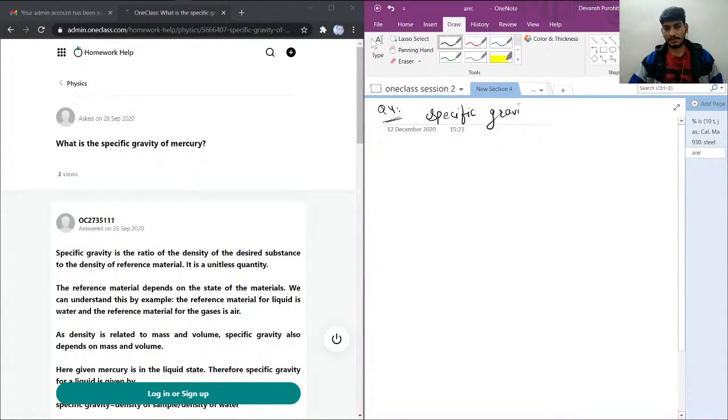Specific gravity of mercury. So for calculating specific gravity of any substance, there is a formula. Let's say sp is my specific gravity, then let's say I have a material m. Then for calculating specific gravity of m material, we take the density of m and the density of water.